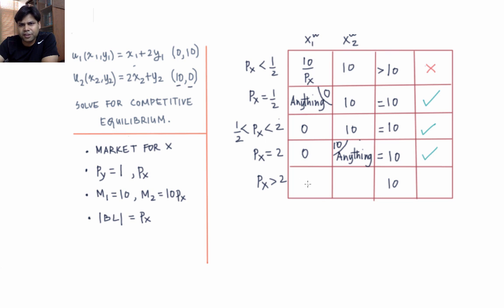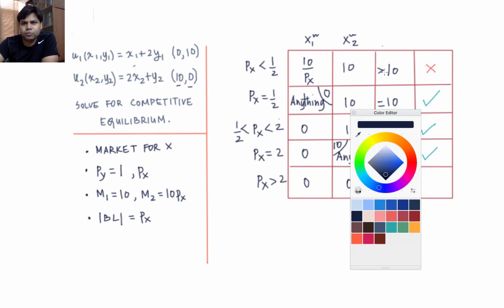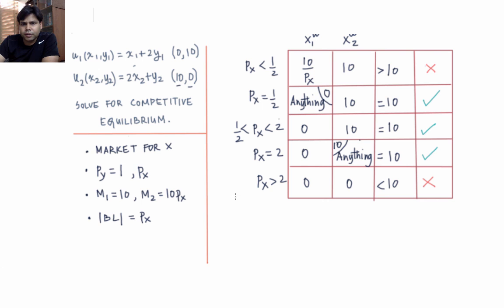When px is greater than 2, individual 1 will choose 0 units of x and individual 2 will also choose 0 units of x, so there is clearly excess supply of x. Therefore we do not have an equilibrium when px is greater than 2.